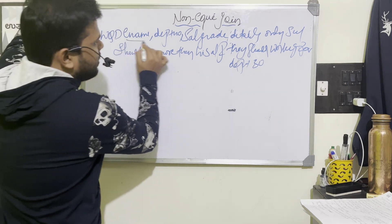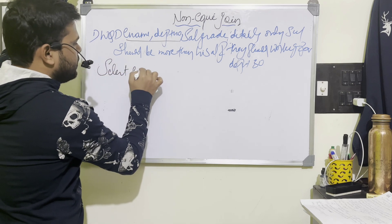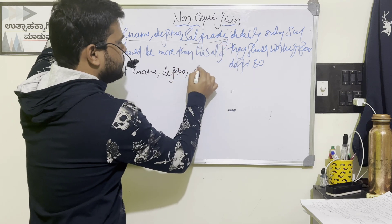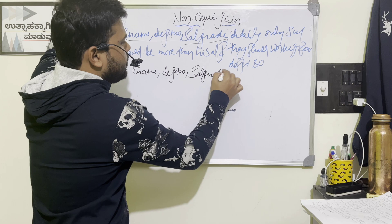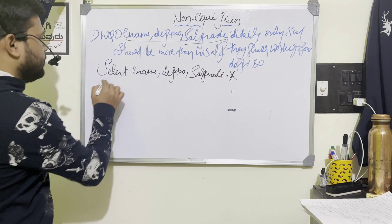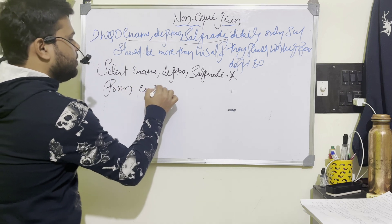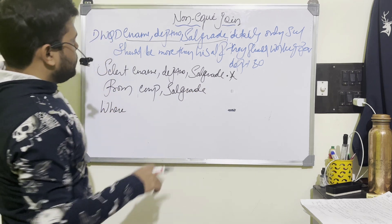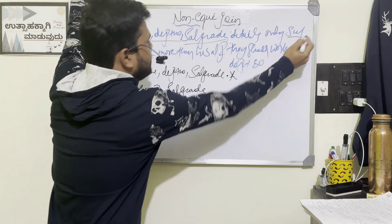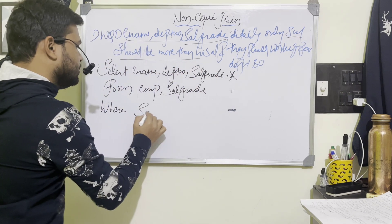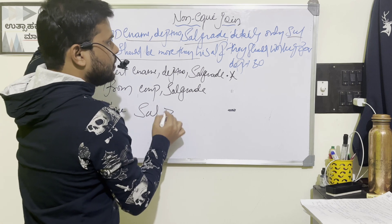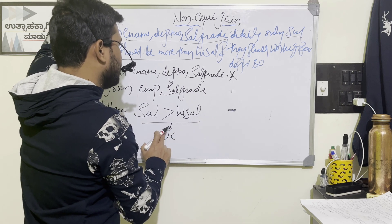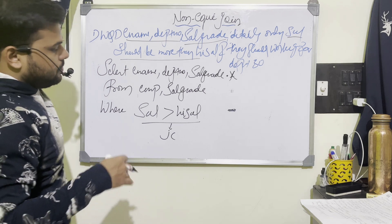Write a query to display employee name, department number, sal_grade details — meaning sal_grade dot star — FROM employee table and sal_grade table WHERE the joining condition is: salary greater than high_sal. This is the joining condition — I am not specifying the equal-to operator, I am using the relational operator greater than. And another condition with respect to column: they should be working for department number 30, so dptno equal to 30.